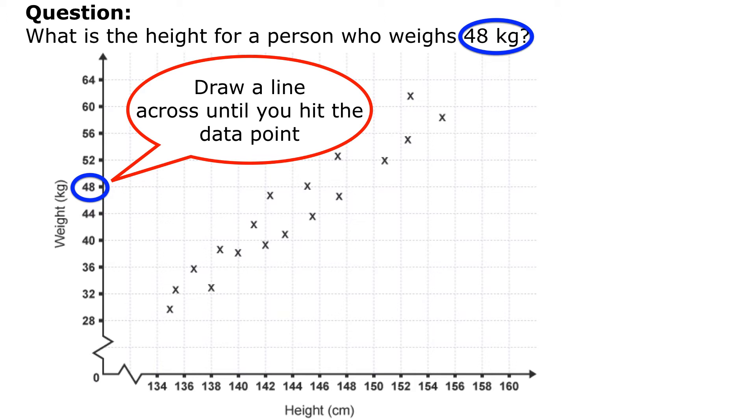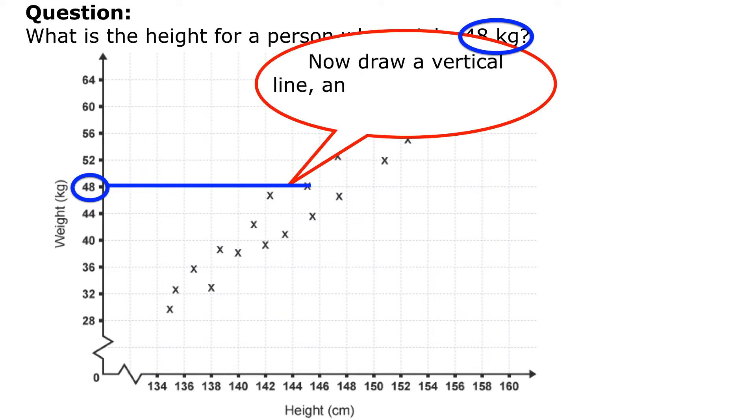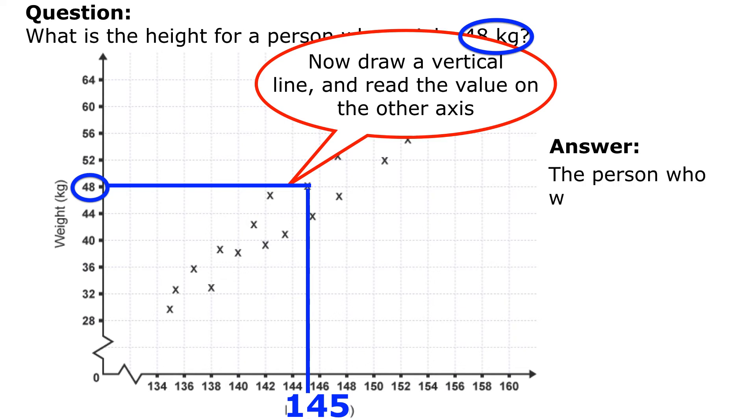And there it is, and there's the person. And now I'm going to draw a vertical line going down and read the value on the other axis. So I'm going to read that going down and that's at around about 145 centimeters. So I can write that up and say the person who weighs 48 kilograms is approximately 145 centimeters tall.